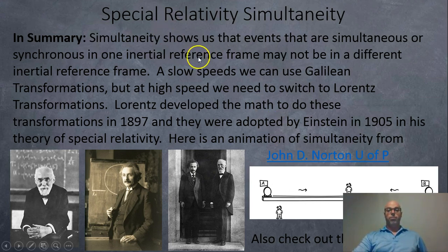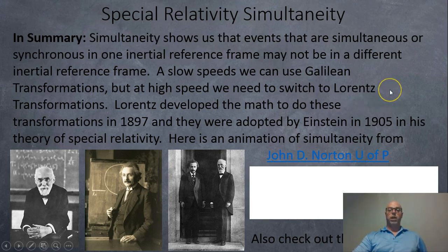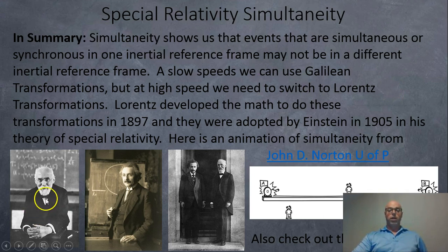So anyways, simultaneity shows us that events that are simultaneous or synchronous in one inertial reference frame may not be in the other reference frame. At slow speeds, we can see Galilean transformations work, but at high speeds we need to switch to Lorentz transformations. Here's Lorentz right here. Lorentz came up with these equations in 1897. Then Einstein, who was a friend of Lorentz, as you can see right here, adopted them in his theory of special relativity.